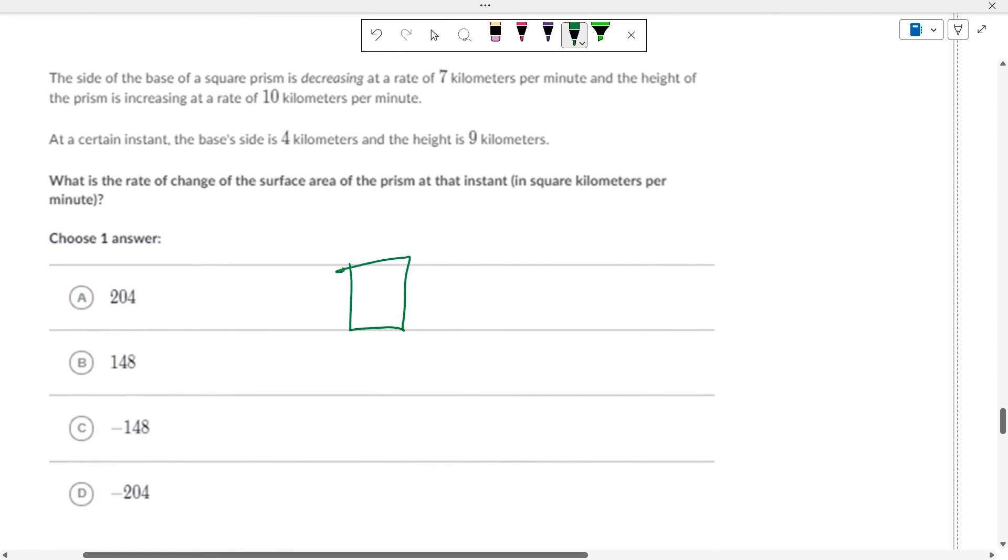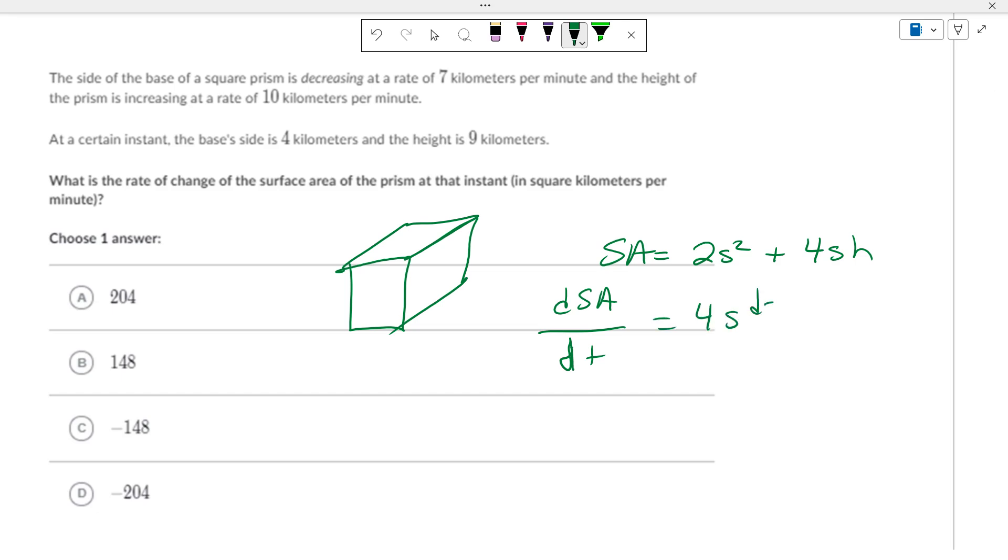Square prism. Rate of the surface area. A surface area of a square base prism is the area of the base, which is 2 times the side squared. There's 2 bases, the top and the bottom. Plus, there's 4 sides. So, 4 times the length of the bottom times the height. So, the side times the height. So, there's 4 of these, and then 2 of these. Alright, so, dSA/dt would equal 4s dS/dt plus 4s dH/dt plus H times 4 dS/dt.